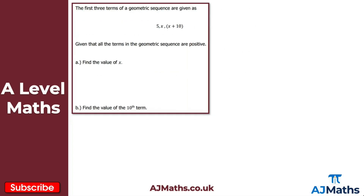For question two, the first three terms of a geometric sequence are given as 5, x, and x + 10, and all terms are positive. For part a, we find x using the property that the common ratio is constant: the second term divided by the first must equal the third term divided by the second. So x over 5 = (x + 10) over x, which gives x² = 5(x + 10).